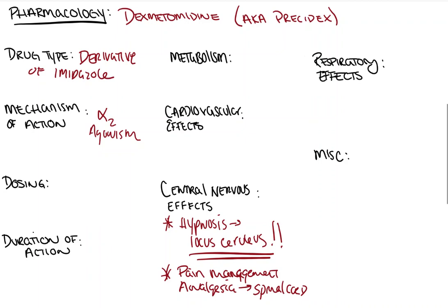One of the important miscellaneous facts to know about dexmedetomidine is that it causes our patients to enter an almost normal sleep state. This is different than our other drugs — it causes our patients, through activation of parts of the brain that undergo normal sleep, to look like they are actually having normal, regular nighttime sleep, which is really important especially in patients in the ICU where delirium can become a big issue.